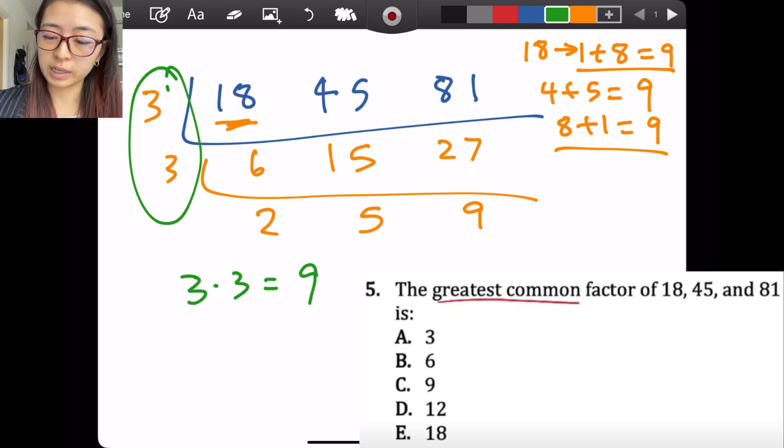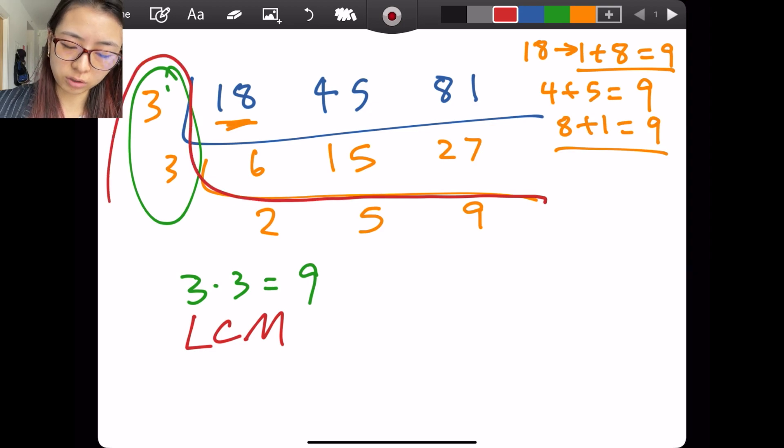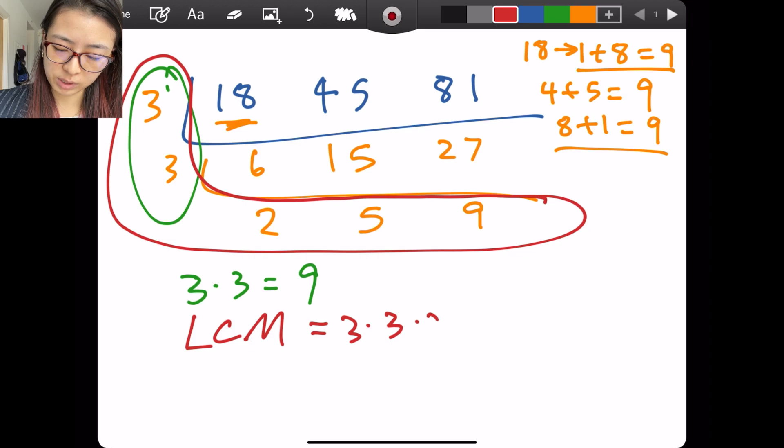If the question was asking what is the least common multiple, it's also super easy because that is simply the product of all these numbers outside the L. So that equals 3 times 3 times 2 times 5 times 9.